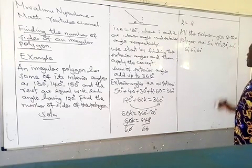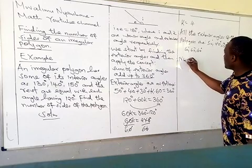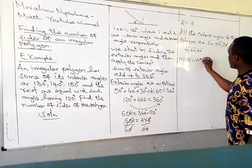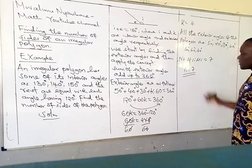So if you count this number of angles, we will get you the number of sides. Therefore, we are going to say that our number of sides is 7. That means N is 7. So those are the number of sides.